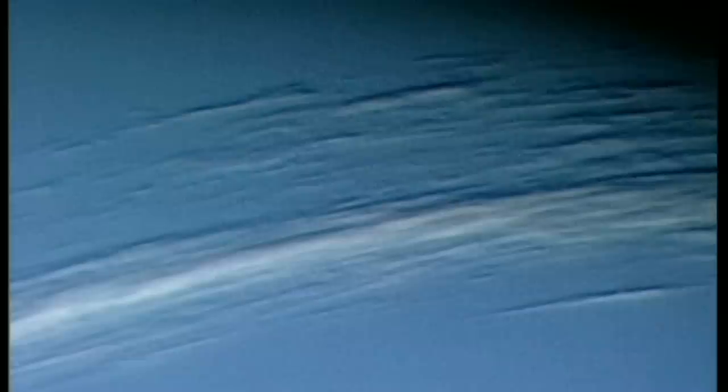Les nuages d'altitude sont froids, à moins de 100 degrés. Mais le climat est réglé par la chaleur interne de Neptune, une chaleur qui manque à Uranus. Voyager détecte une tempête de la taille de la Terre, la grande tâche sombre.